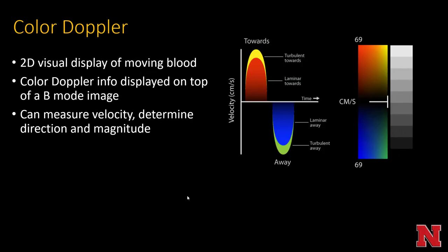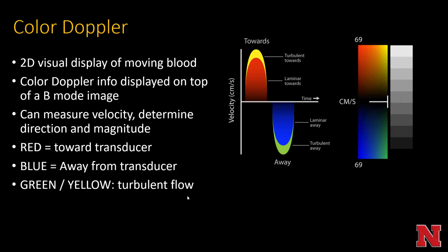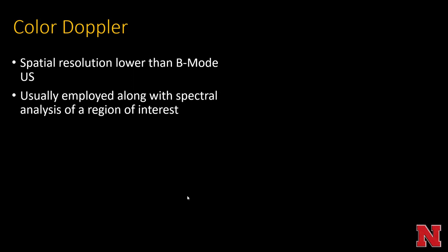Color Doppler provides 2D visualization of moving blood. The information is displayed on top of a B-mode ultrasound image so you can interpret it in context. You can measure velocity, determine direction, and assess magnitude. Red indicates flow toward the transducer, blue indicates flow away. Yellow or green typically signifies aliasing or turbulent flow. Spatial resolution tends to be lower than B-mode ultrasound and is usually employed alongside spectral analysis in a given region of interest.